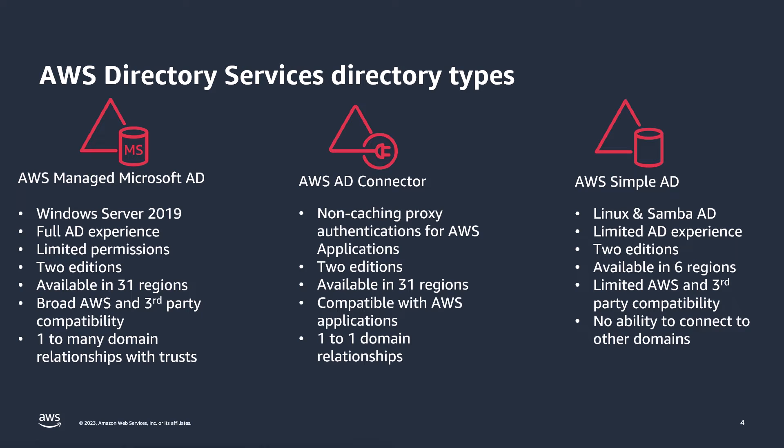Next up, we have AWS AD Connector. It is a non-caching authentication proxy for AWS applications. It comes in two editions, small and large. The editions are identical other than the compute behind them. I generally recommend customers start with a small edition, and if they need to upgrade to large, they can open a support case requesting an upgrade. It is also available in 31 regions and is compatible with AWS applications — it does not work with third-party applications. It offers only a one-to-one domain relationship, so if you have a complex on-premises Active Directory environment, you may need multiple AD connectors for each domain.